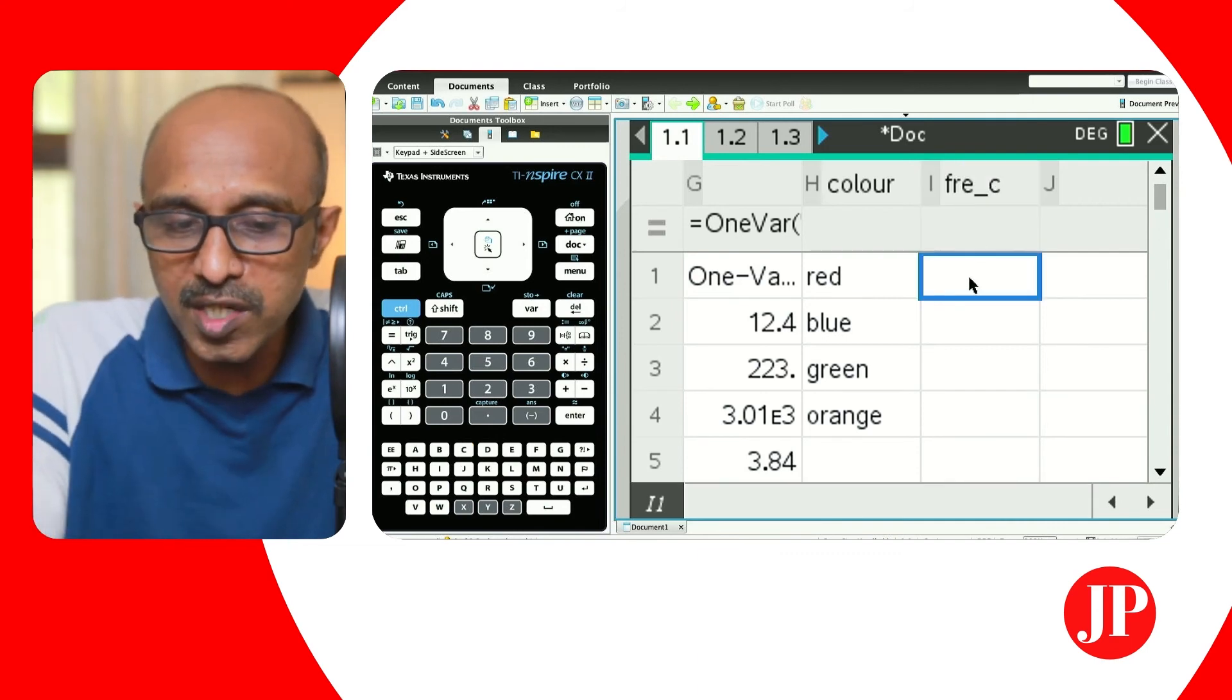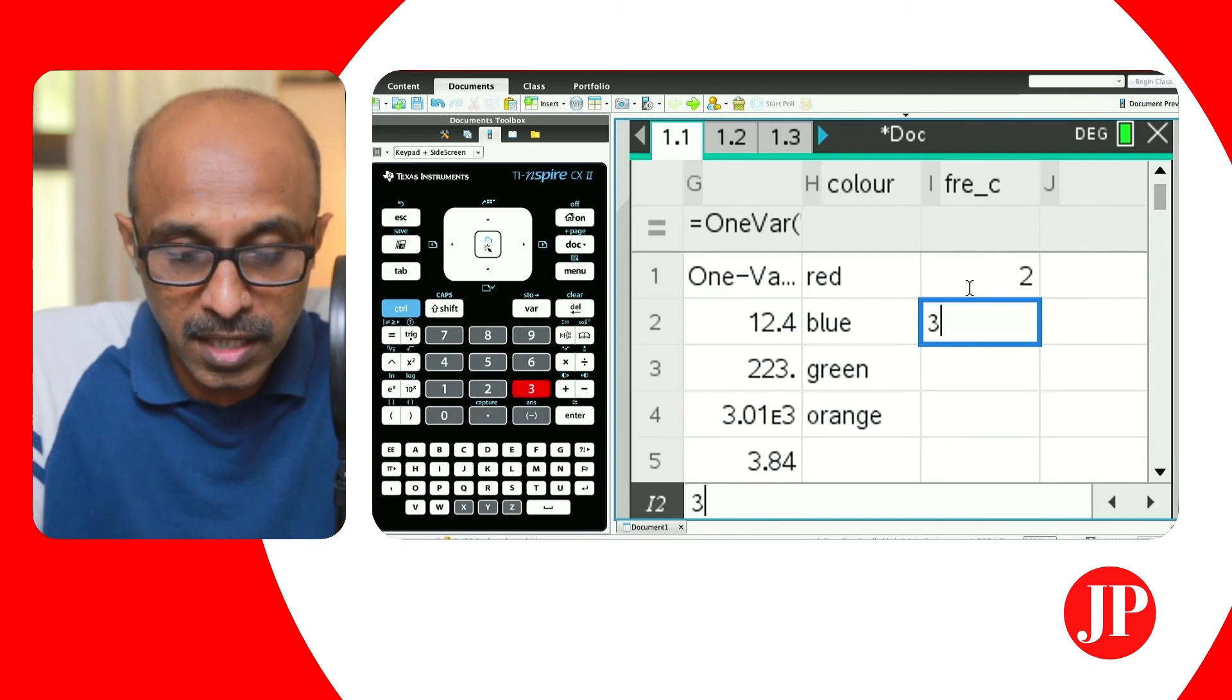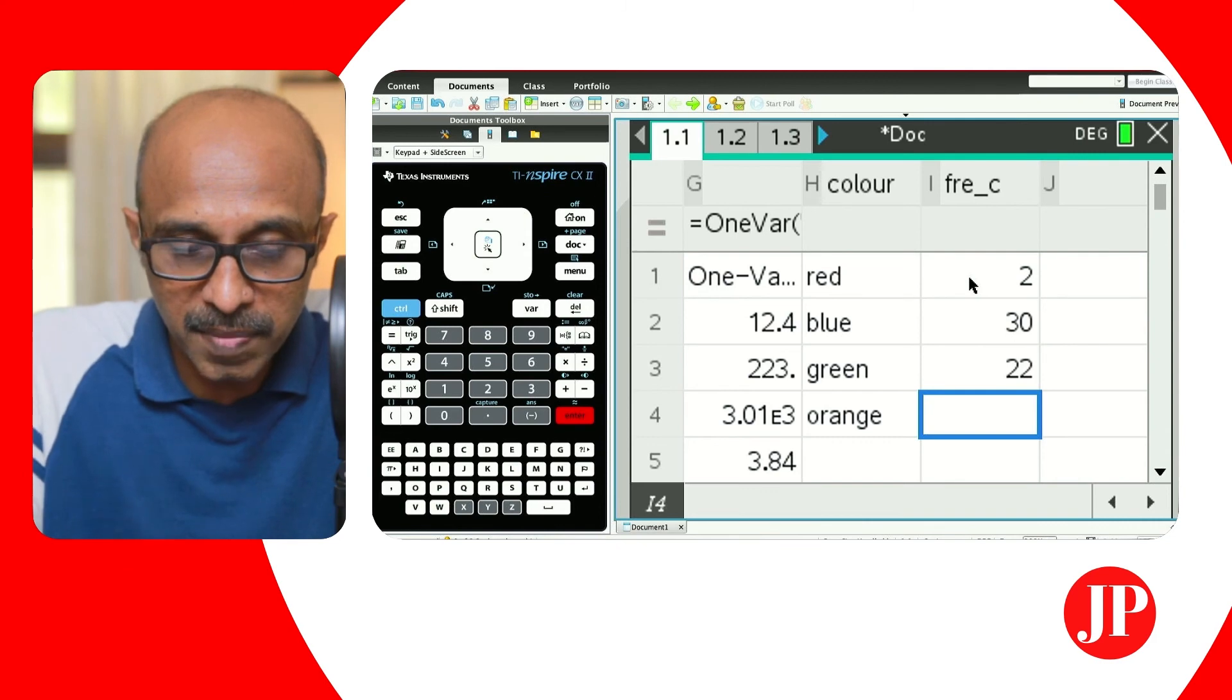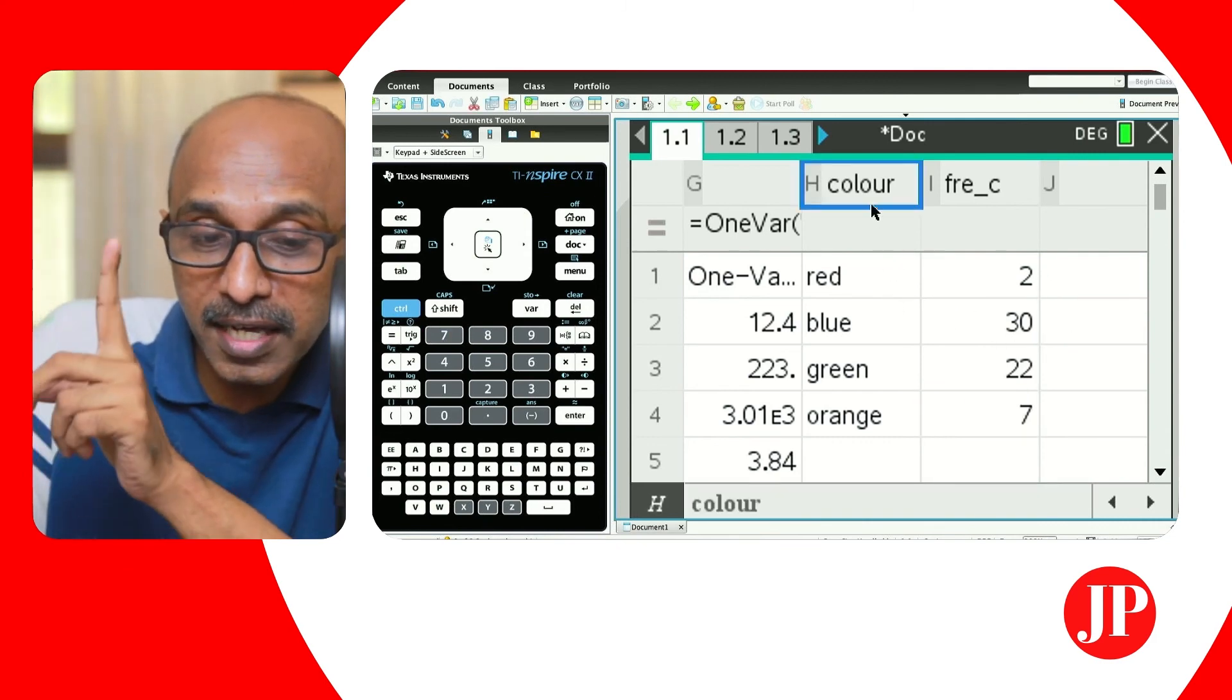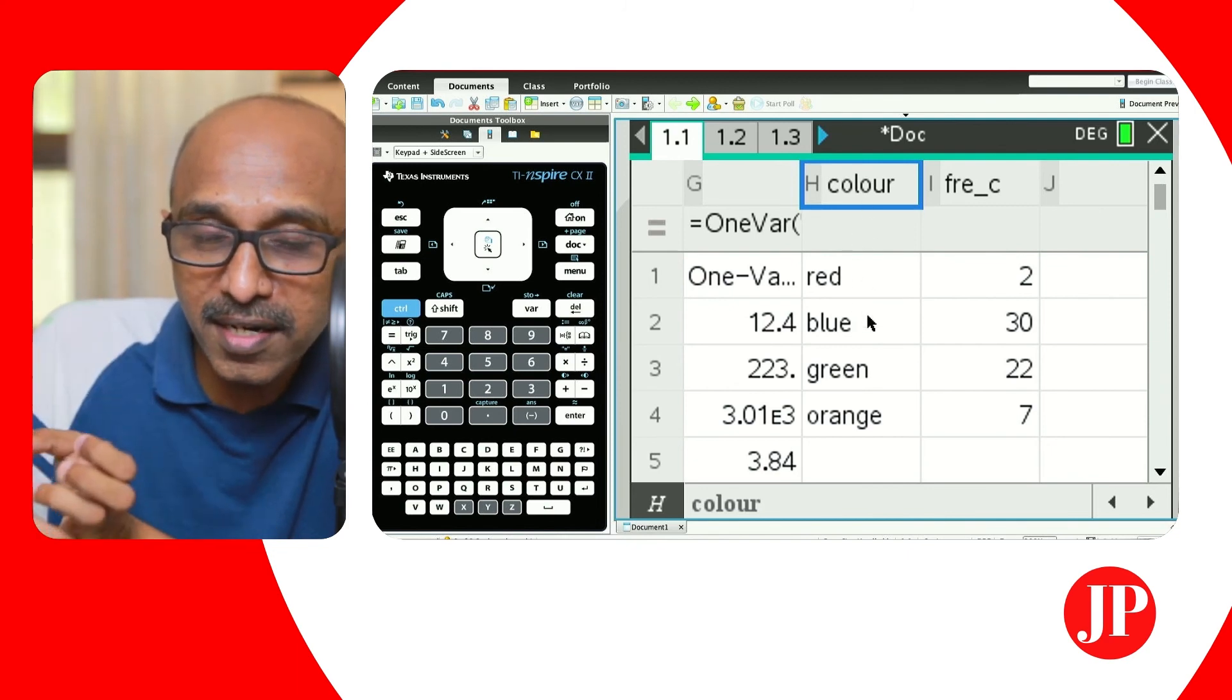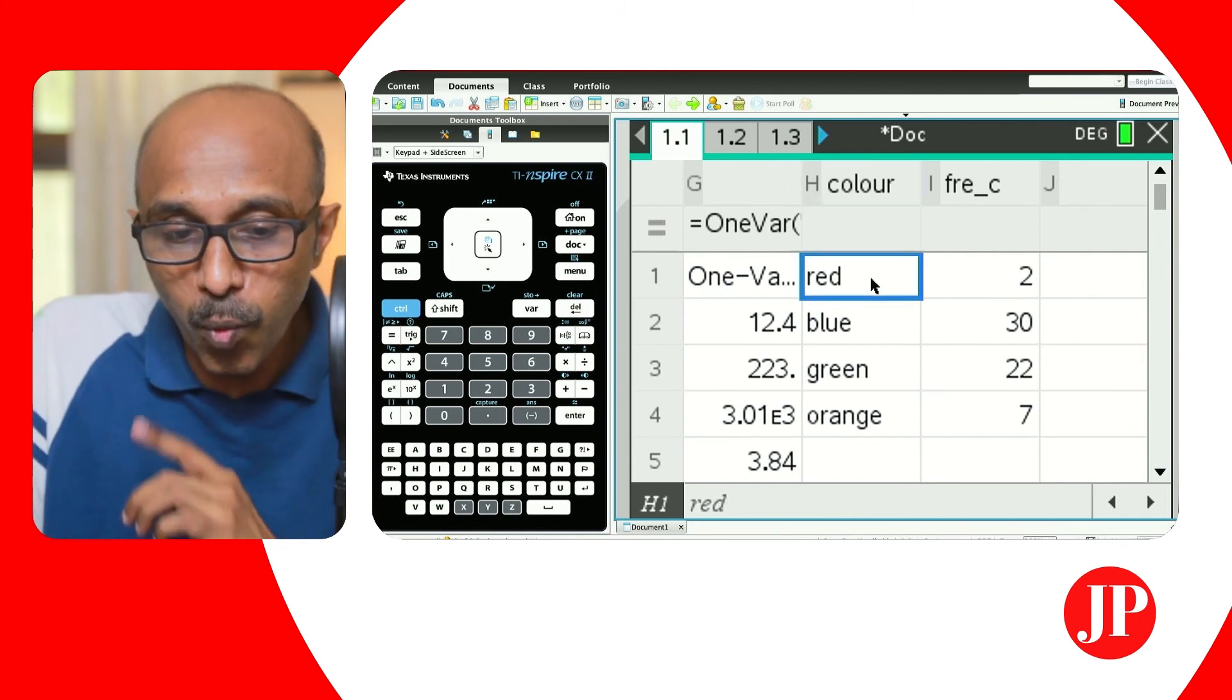So the frequency of the red color, let's say two, maybe 30, maybe 22, and maybe seven. So I just made up this kind of a frequency distribution. But this time, the data is color, which is not numerical. Non-numerical data is qualitative data. And this is the frequency associated with the data. But watch what is going to happen. I want to show you one more thing.